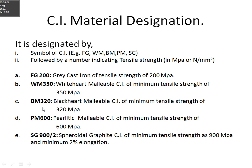Next, BM320. BM indicates the black heart malleable cast iron, and 320 is the number which indicates its minimum tensile strength. So the meaning of BM320 is black heart malleable cast iron having minimum tensile strength of 320 MPa.